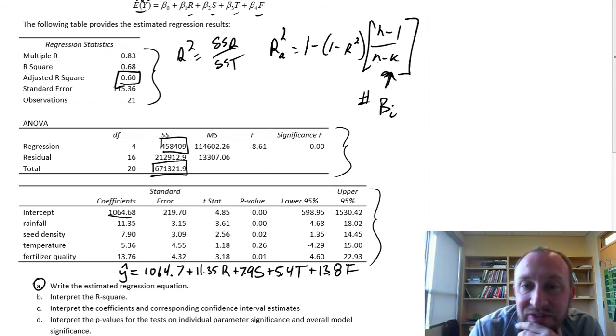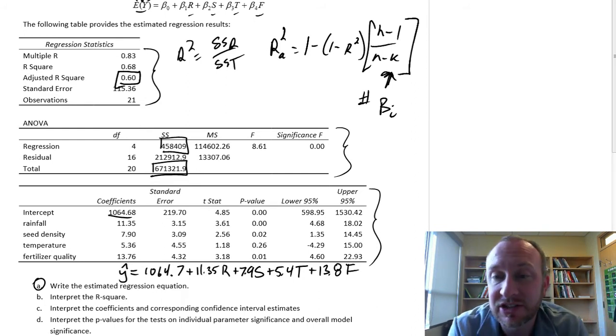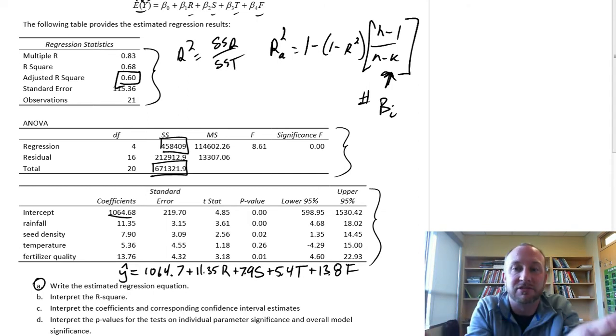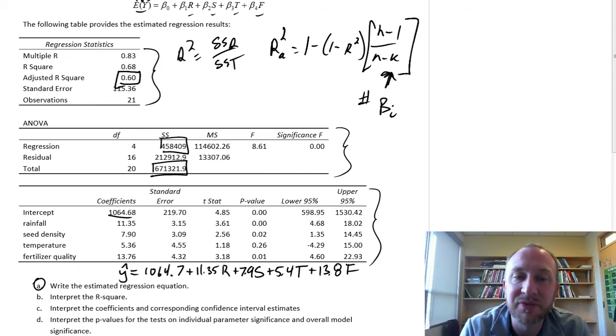If we have an independent variable in the model that doesn't contribute a significant amount to the r squared, then we're penalized for that, because we're losing a degree of freedom. If the loss in the degree of freedom from the introduction of that independent variable is not offset by a significant contribution to the r squared, well then that adjusted r squared will go down.